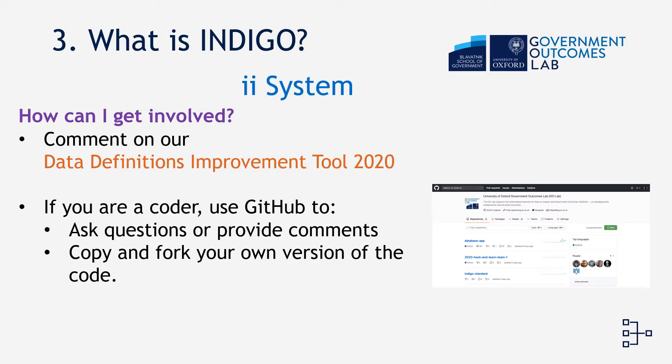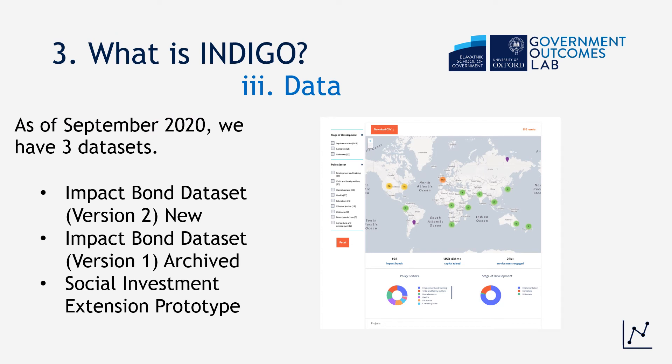You can get involved in our system layer by commenting on our data definitions using our data definitions improvement tool. And if you're a coder, you can use GitHub to access and improve the code. Our third layer — the layer with all the blueberries in the pancake — is our data layer. As of September 2020, we have three datasets: the Impact Bond dataset version two, which is new; the Impact Bond dataset version one, which is archived and previously known as the Projects database; and a social investment extension prototype.